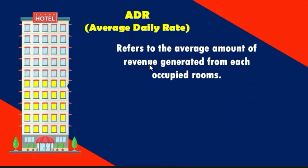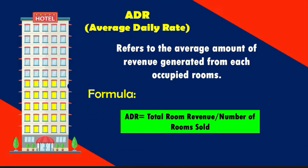The second one is the average daily rate or ADR. ADR refers to the average amount of revenue generated from each occupied room. Hotel rooms are priced differently — it could be based on the number of beds, the location, or other factors. ADR helps understand how much revenue is earned per room on average. This changes over time due to influences such as season, holidays, or the type of tourist or corporate market being targeted. Average daily rate is calculated by the total revenue divided by the number of rooms sold.